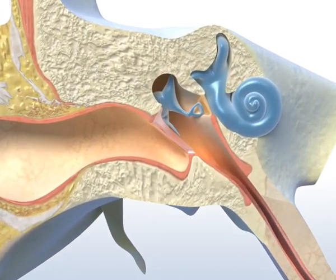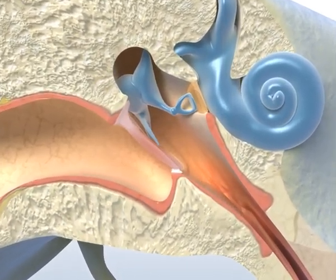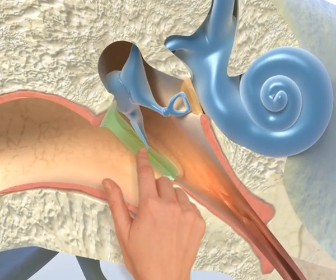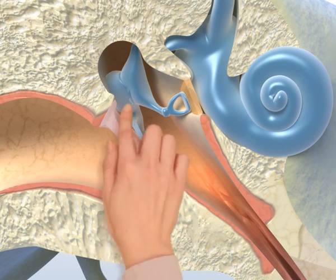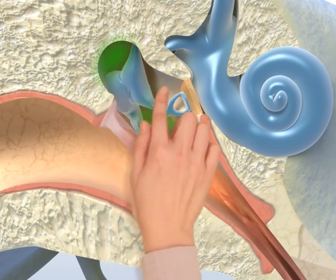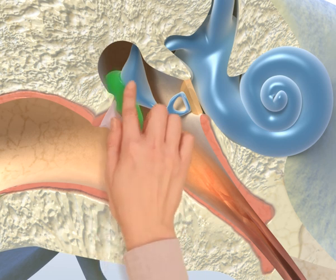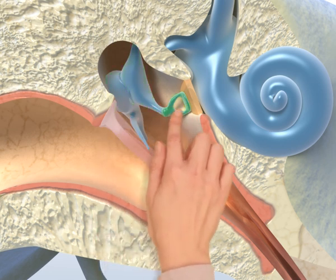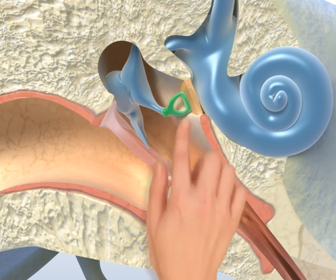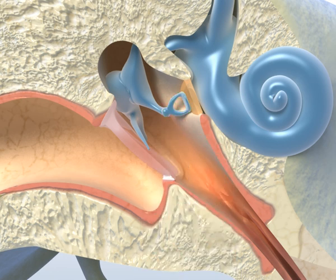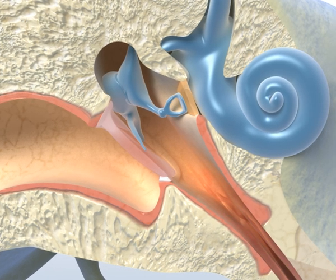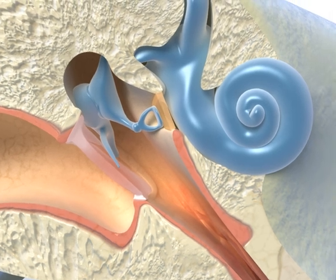The middle ear is a space filled with air that is made up of these parts: the eardrum, the tympanic cavity between the eardrum and the inner ear, where the ear bones — the hammer, anvil and stirrup — are located, and the auditory tube, also called the eustachian tube, which connects the middle ear to the nose and throat area.